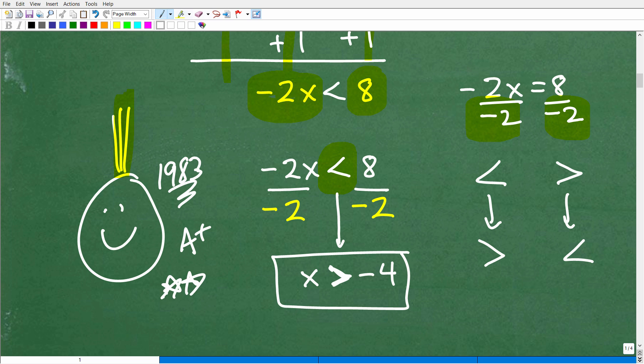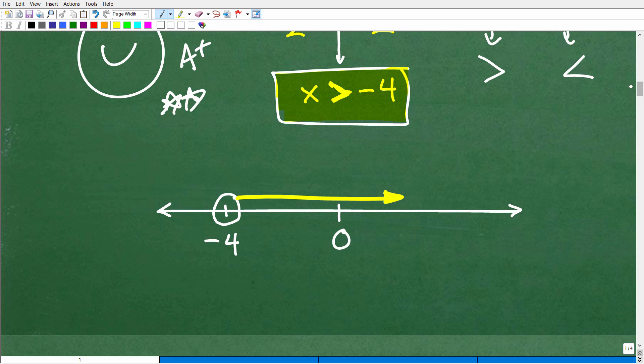However, we're not done because we want to represent this right here graphically. x is greater than negative 4. So this is what your teacher would expect you to have. We have a number line graph. Here's 0. Here's negative 4, okay? Notice I'm putting this down right here on the number line.